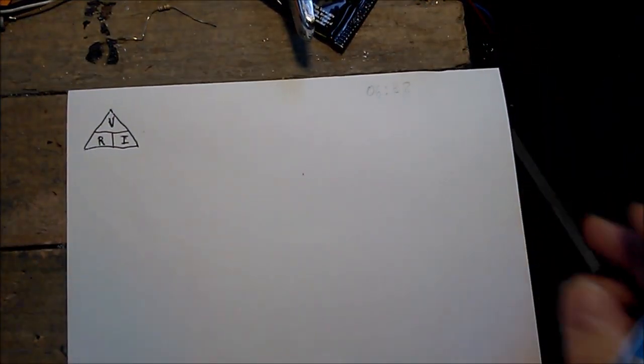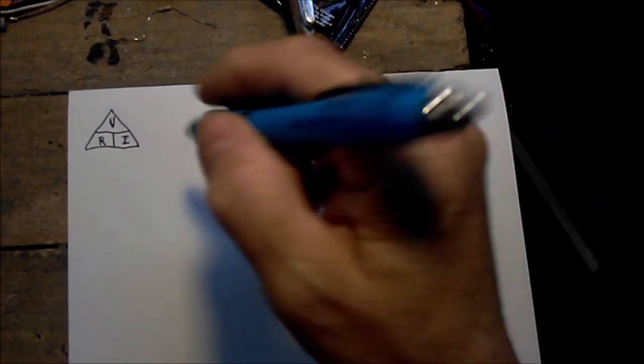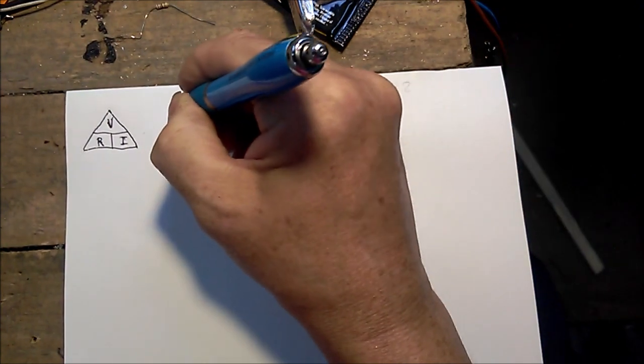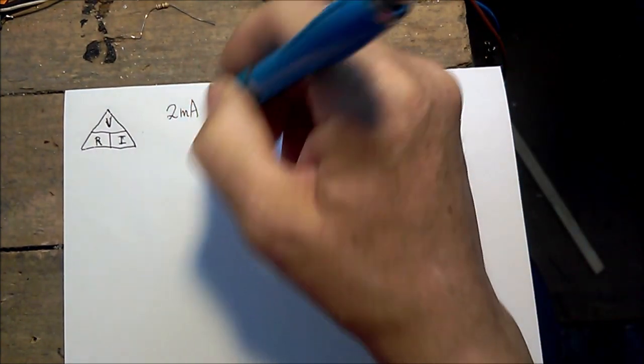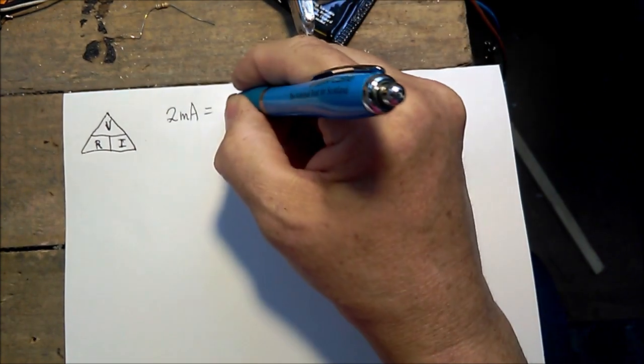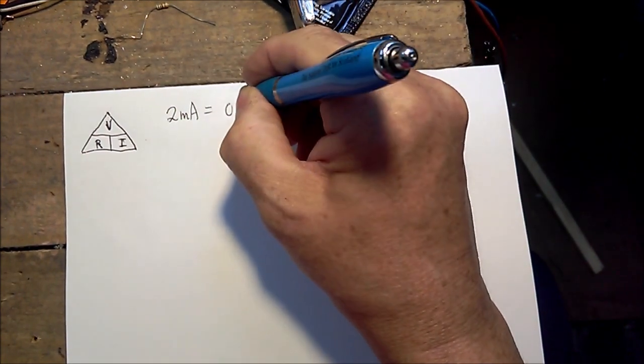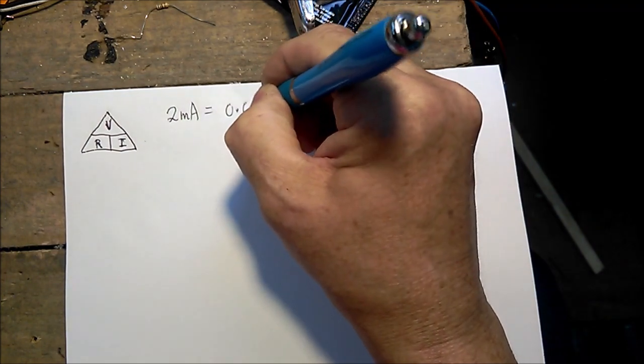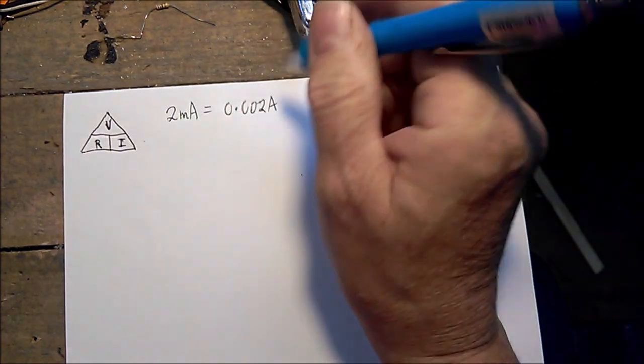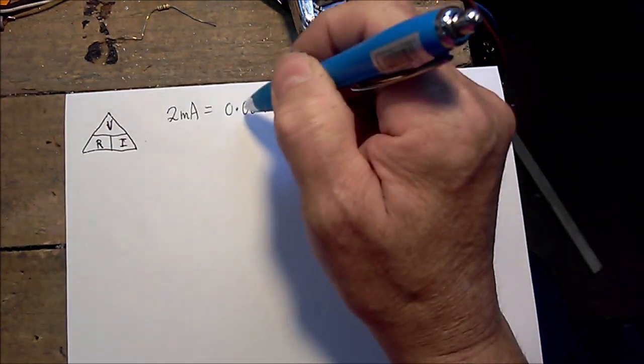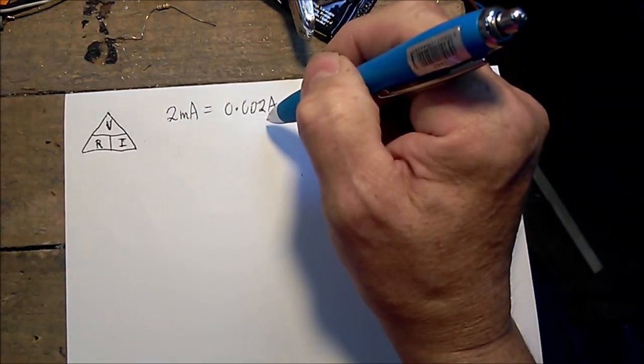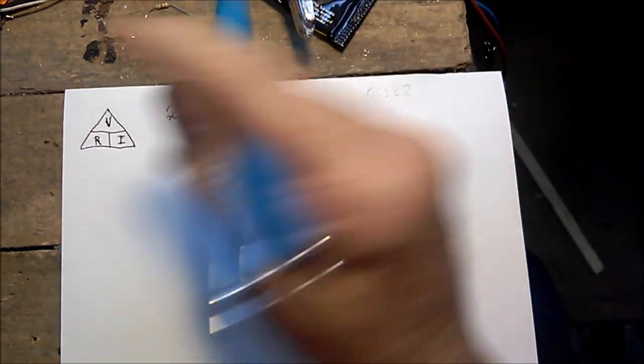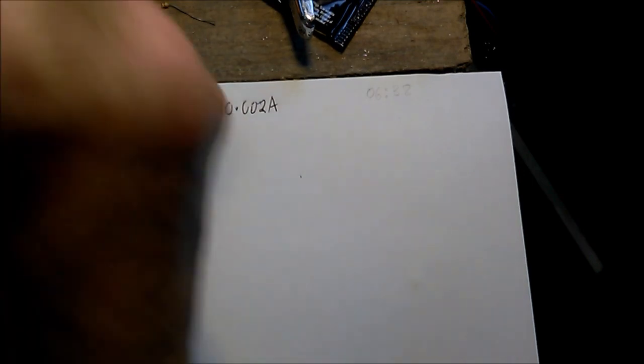One thing I'm always doing is I tend to get a little bit mixed up and forget that, for example, two milliamps, which is what we will be working with, is represented by 0.002 amps. Another way of doing it would be to put two as in amps, divide it by a thousand, and you'll end up with the same amount.